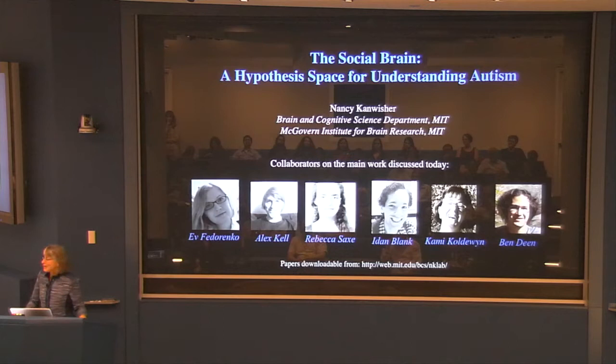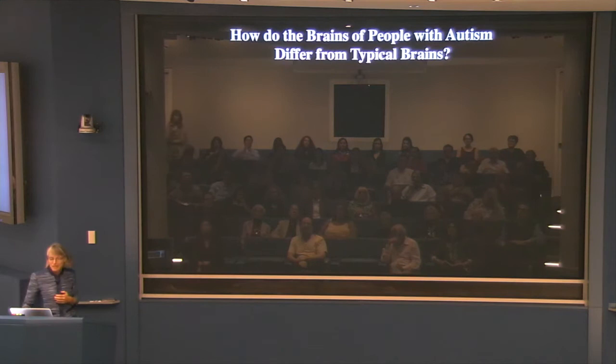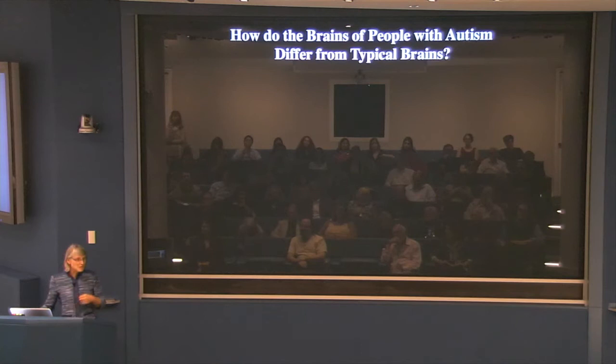How does autism differ from typical brains? I'm going to try to address this question of how the brains of people with autism differ from typical brains, which seems to me a pretty central question we're going to need to answer if we're going to understand autism.